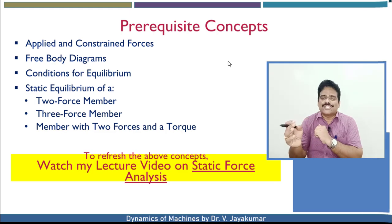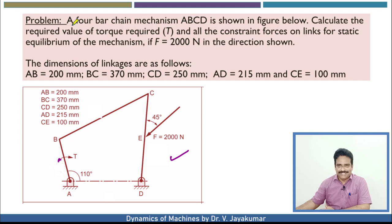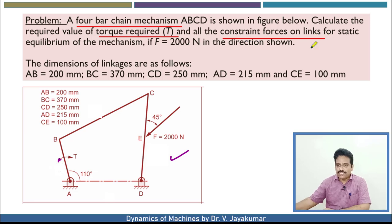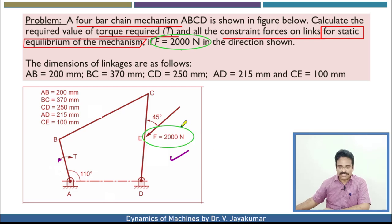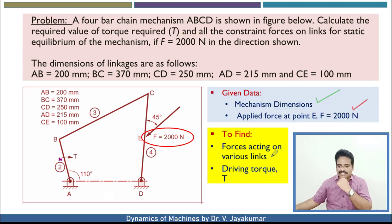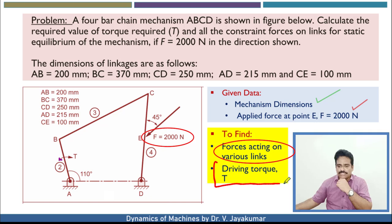So let's get started. This is the given problem. Let us read the problem carefully. ABCD four-bar mechanism is given and we need to determine the required value of torque T and all the constrained forces on links. The mechanism is in static equilibrium and external forces are given. The dimensions of the links are also given. We need to find all the various forces acting on the various links and also the driving torque T which might be acting.